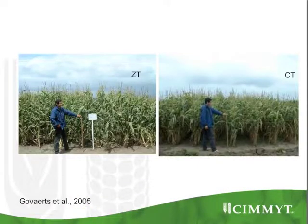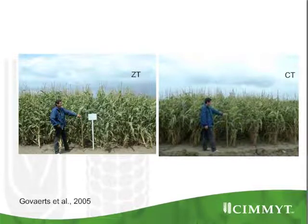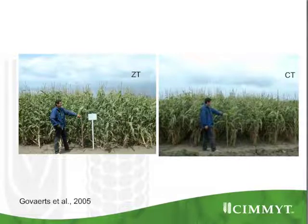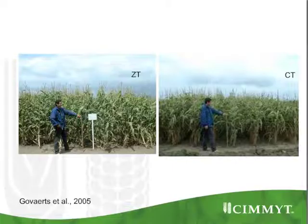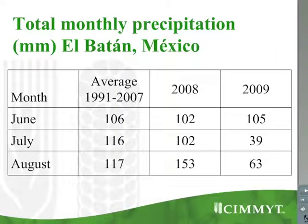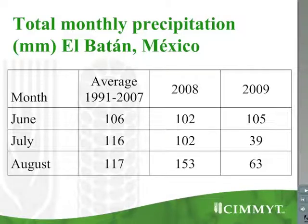Differences are not all that dramatic all throughout the experiment. You can see the differences between zero tillage with residue and what the farmer is doing is not that big in this picture. This picture was taken in 2008. In 2008, when we compare with the average precipitation and compare what happened in the critical months of July and August, you can see that we had good rainfall in 2008.